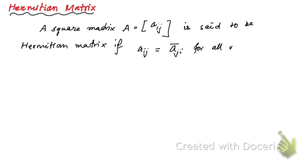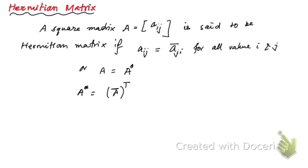Alternatively, you can define a Hermitian matrix as A equals A^θ, where A^θ denotes the transpose of the complex conjugate of A.